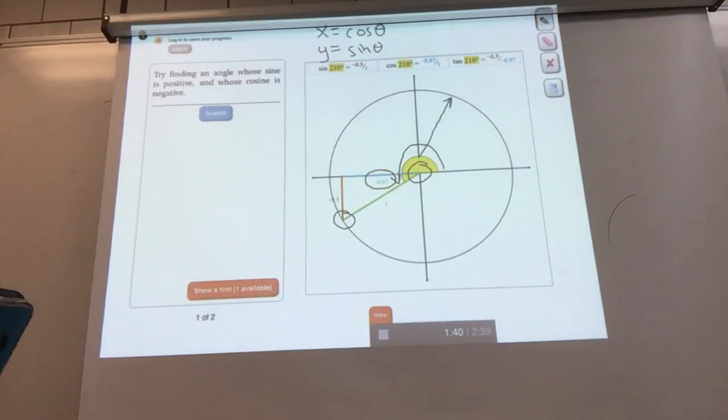Previously you learned sine, cosine, and tangent for angles between 0 and 90 degrees. Here you'll learn for angles outside that range. To find cosine of 210 degrees, make a unit circle - centered at the origin with radius 1. Find a point on the circumference making a 210 degree angle with the positive x-axis. Start at 0 degrees and rotate counterclockwise: 90 degrees, 180 degrees, 210 degrees. Now find the x and y coordinates of this point, because the x-coordinate equals the cosine and the y-coordinate equals the sine.